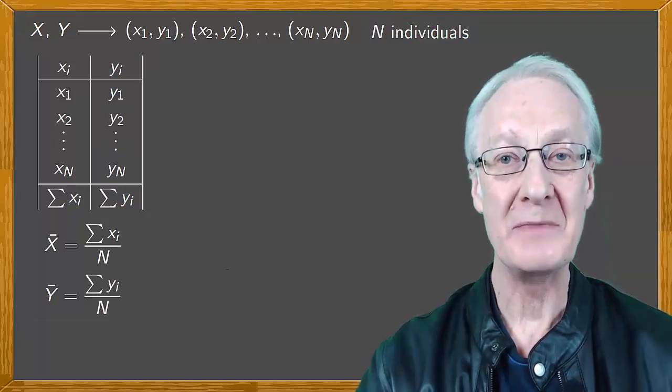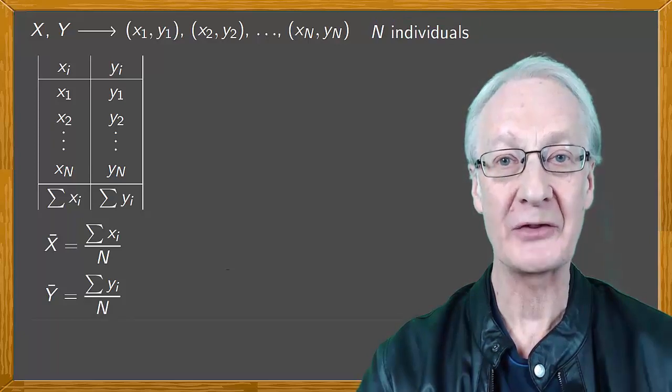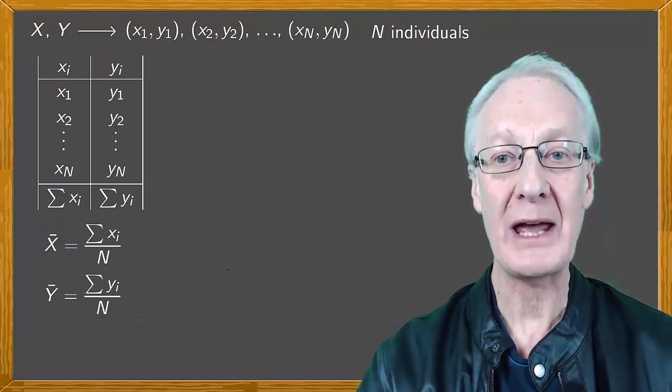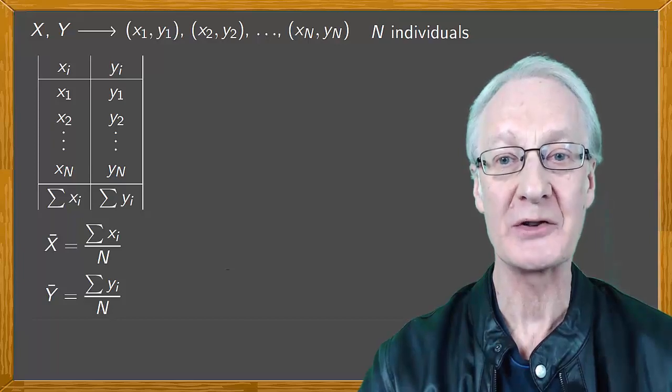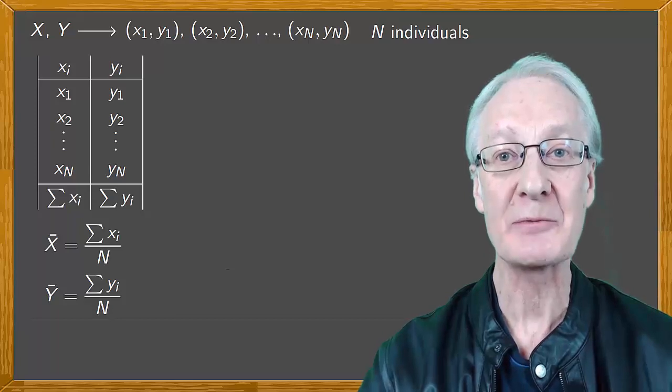We could obtain the medians and the modes of x and y, but here we'll just go ahead and calculate the variances and the standard deviations of x and y. As you know, these are measures of dispersion, which indicate how spread out the data are with respect to the average.